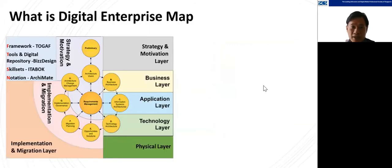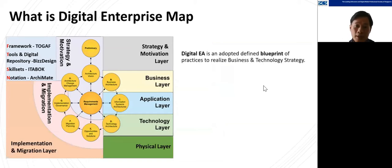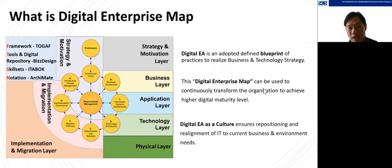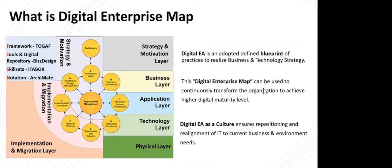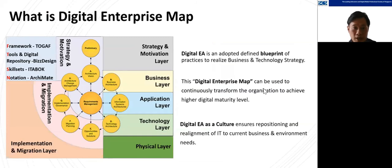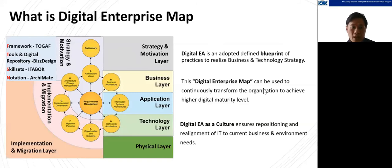What is a digital enterprise map? A digital enterprise map consists of four things: first, the framework — for us we use TOGAF. Second, the tools — there are business design tools and many others to choose from. Third, the skill set — specifically the IT architecture body of knowledge needed to perform EA transformation. Lastly, the notation: we use ArchiMate, which is a common modeling language that can model your strategy, business, application, technology, and physical layers in a single tool and map the correlations between them. That is the key factor for digital EA transformation — being able to see all the impacts across all layers in a single tool.